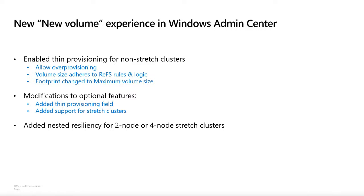The footprint parameter has been changed to the maximum volume size parameter because when you have thin provisioning, the footprint at creation doesn't add a lot of value since you're not actually taking up much space. We've also made adjustments to the optional features area — notably adding a thin provisioning field. We've also heard feedback about adding support for stretch clusters, so optional features will now be available for those. Additionally, nested resiliency has been added as an option for two-node and four-node stretch clusters.